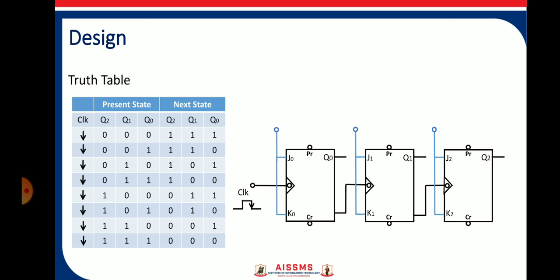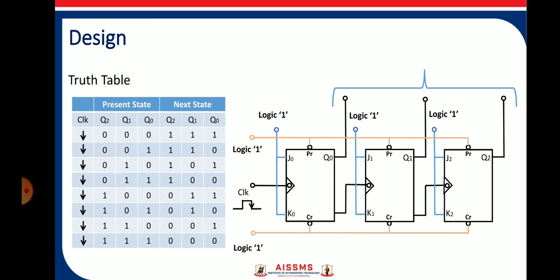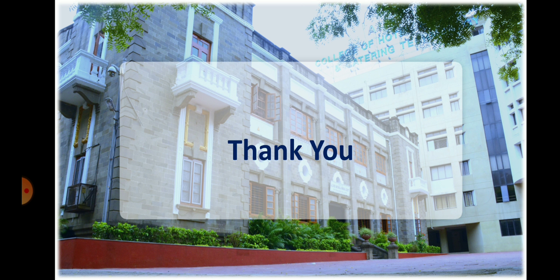Now the input of all the JK flip-flops are connected to logic 1. In a synchronous counter we always connect the input of flip-flops to logic 1. This is the CR pin connected to each other and finally it is connected to logic 1. And the output we are going to take parallely. This is the output. And this is the logical diagram for 3-bit asynchronous down counter. Thank you.